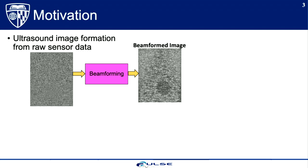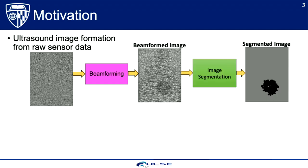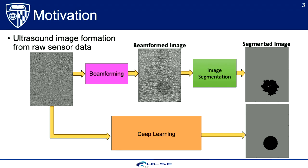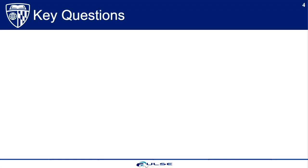pass it through beamforming to achieve the image that sonographers see on the screen, and then we might apply additional post-processing to extract structures of interest such as image segmentation. The deep learning community has traditionally applied deep learning algorithms to the beamformed image to segment structures of interest. What I'm doing that's new and different is starting with the same raw data, bypassing the mathematical component of image formation, and replacing that with deep learning in order to segment a more interpretable image.